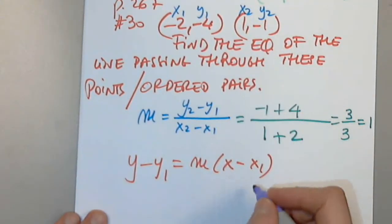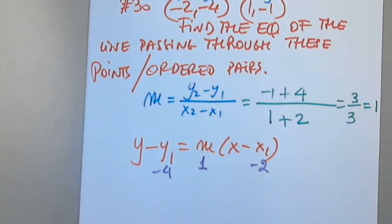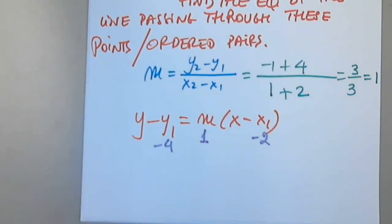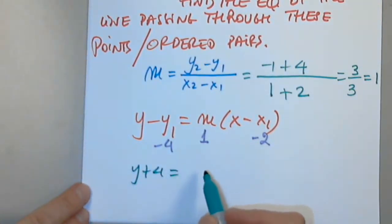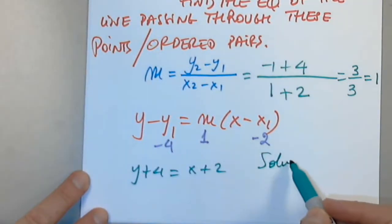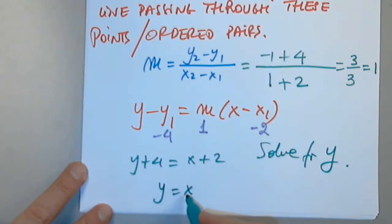First. So then x1 is negative 2, y1 is negative 4, and the slope is 1. I write the equation and put the corresponding values underneath. I see y minus negative 4, so instead of distributing negative 1, I write y plus 4 equals x plus 2, because the slope is 1. I do have to solve for y, which means I subtract 4. So y equals x minus 2.